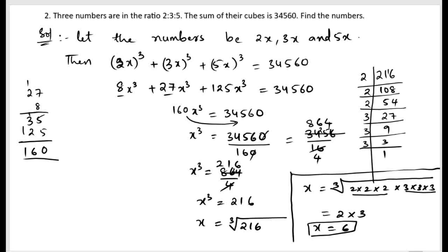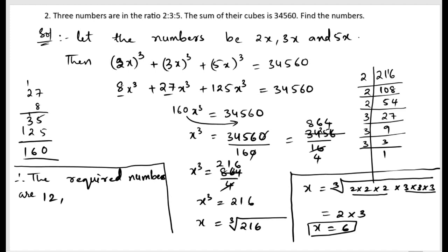Now we are having the value of x. With this value of x, we can find out the required numbers. So therefore, the required numbers are: first is 2x, x value is 6, so 2 times 6 equals 12. Next is 3x, 3 into 6, 3 times 6 equals 18, and 5 into 6, 5 times 6 equals 30. So these are the required numbers.